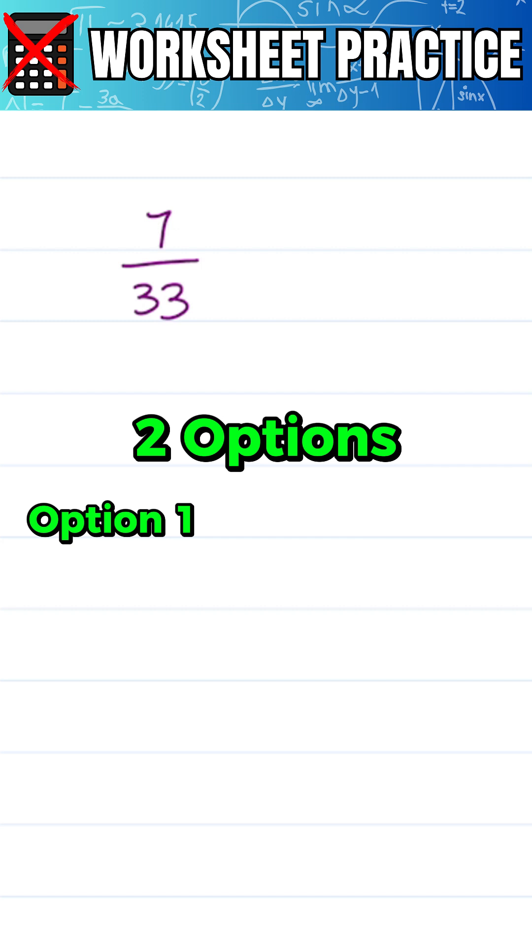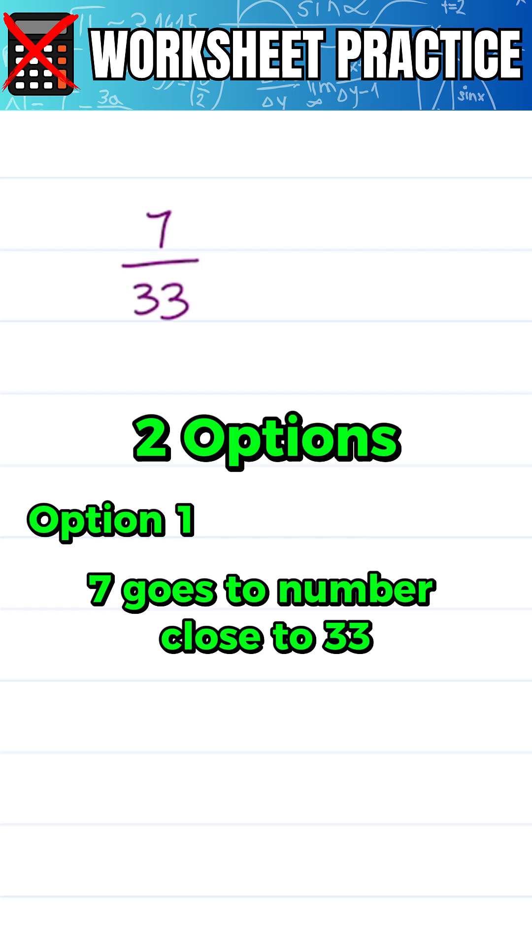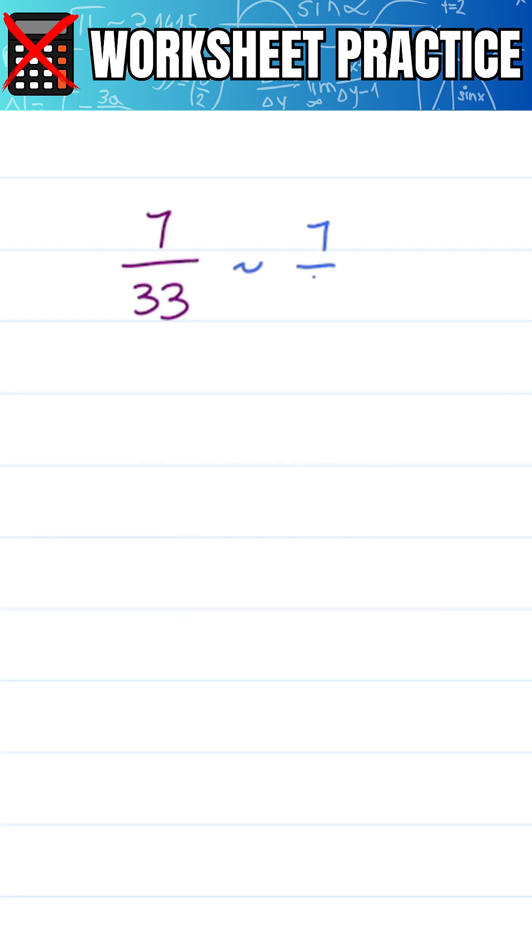Option one is that without a calculator, close enough is good enough, and 7 goes into a number that is very close to 33. If I set this up as 7 over 35, I can reduce this fraction.